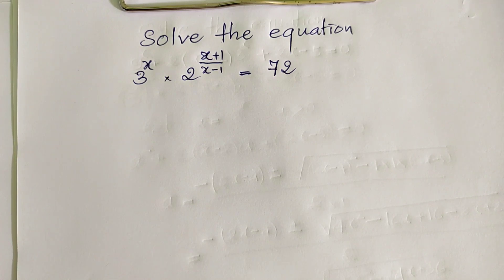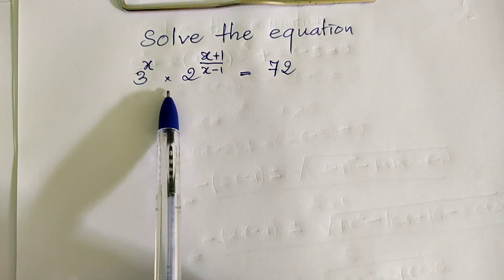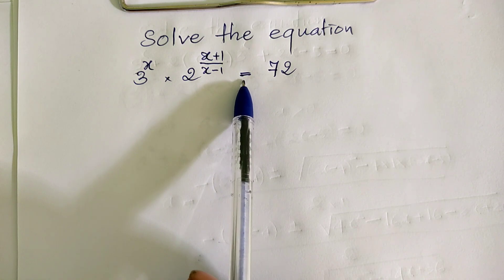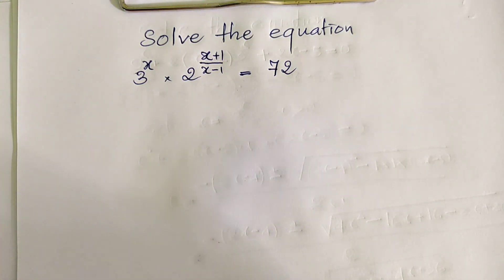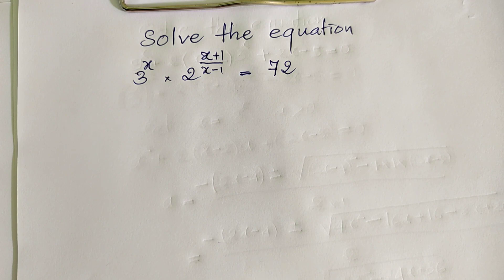Hello everyone, welcome to my YouTube channel. Today I have one exercise from a paper. The equation is: 3 power 8n plus 2 power 8 plus 1, divided by h minus 1, equals 72. Do you know how to solve this? If you know, please do it. When you are done, come back to watch my video from beginning to end to verify your solution. Before we go to the solution, please don't forget to subscribe to my channel for more exciting videos.